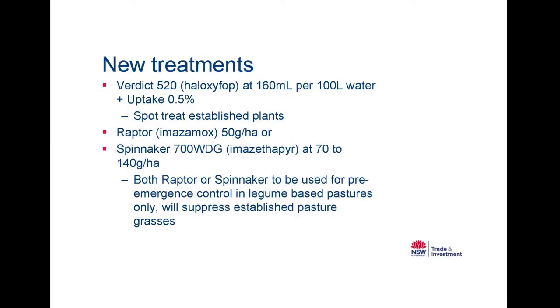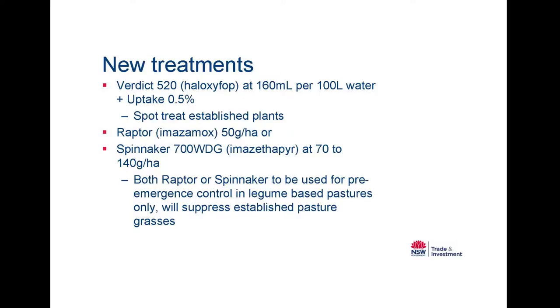So in summary for these treatments, it was Verdict 520, which we used, and we're going for the permit application. At 160 mls per 100 litres of water, plus uptake, and we're spot-treating, only spot-treating. We can't put it out as a boom. Raptor, which is Imazamox, which is the active ingredient, which is selective, at 50 grams a hectare, and Spinnaker at 70 to 140 grams. So they're good in a pulse situation or a legume situation. They provide a lot of safety to things like clovers. They do kill grasses. If you've only got young seedling pasture grasses, you'll knock them. But if you've got established grasses, they seem to have a lot more tolerance and they can grow through that.